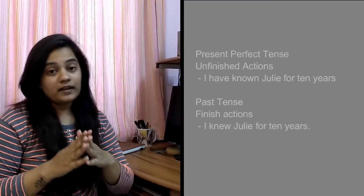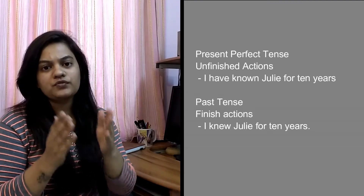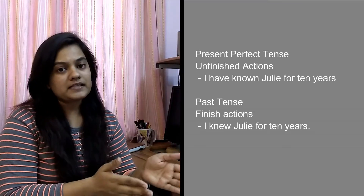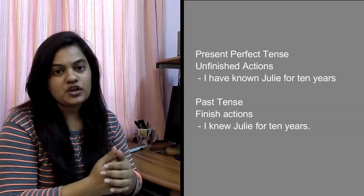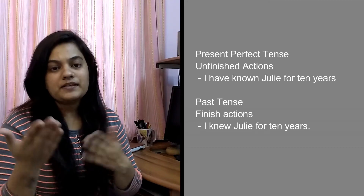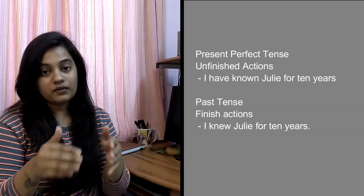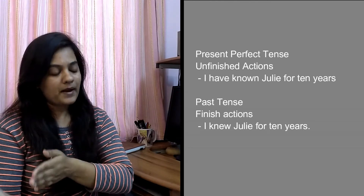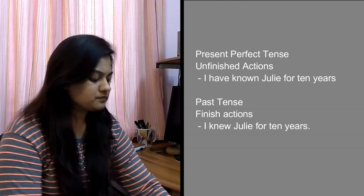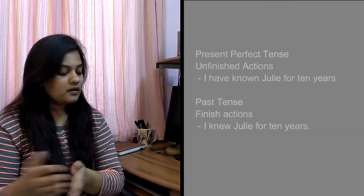Now let's see when to use present perfect tense and when to use simple past tense. First, present perfect tense is used when actions are unfinished, and simple past tense is used when actions are finished. For example, in present perfect tense: I have known Julie for 10 years — meaning I still know her today. But in simple past tense: I knew Julie for 10 years — meaning now I have lost touch with Julie and am not in contact with her anymore. So at that point, you use simple past tense.